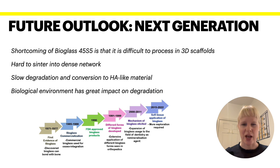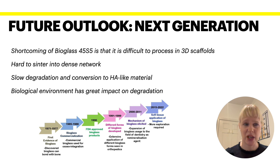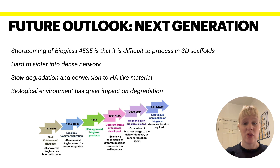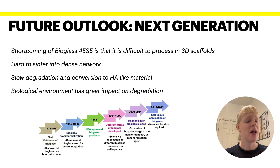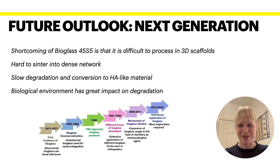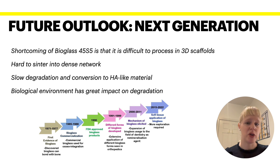Applying bioglass to soft tissue will require further adaptations to the material. Shortcomings of the original bioglass include difficulty processing it into 3D scaffolds and a relatively slow degradation and conversion to an HA-like material. Additionally, environmental factors such as pH and temperature have a great impact on degradation rate, making it important to ensure full control over how fast or slow degradation proceeds after implantation.